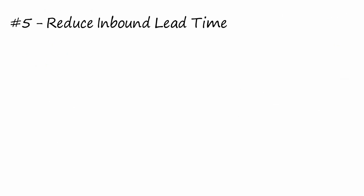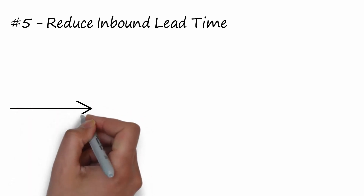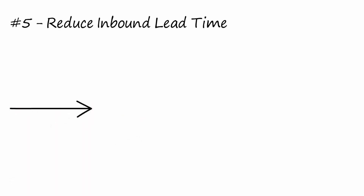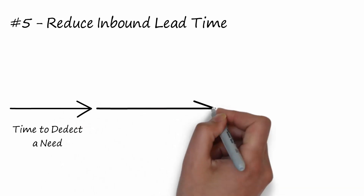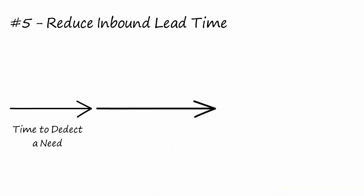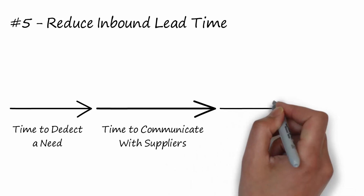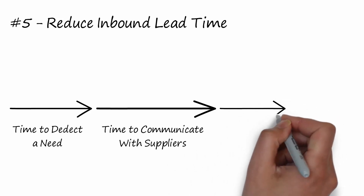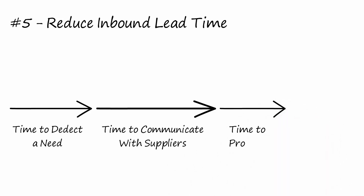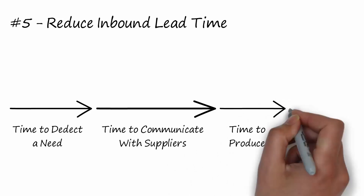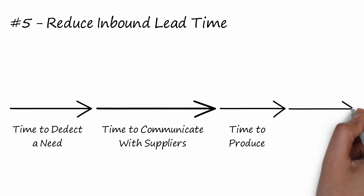Tip 5: Reduce lead time. You can reduce lead time by improving these four areas: A) the time to detect the need of a component; B) the time to send the need to the supplier; C) the time the supplier needs to produce it; and D) the transport time to your facilities.